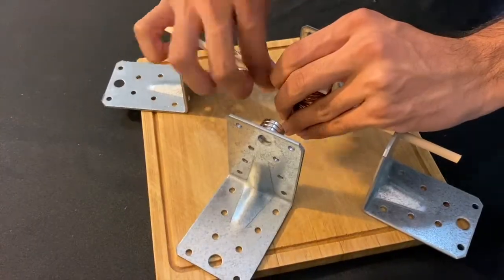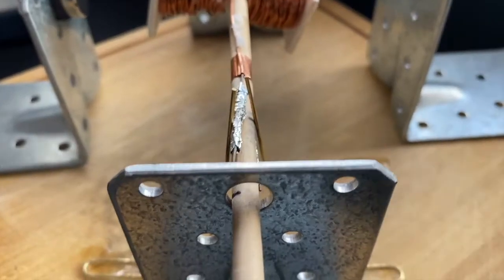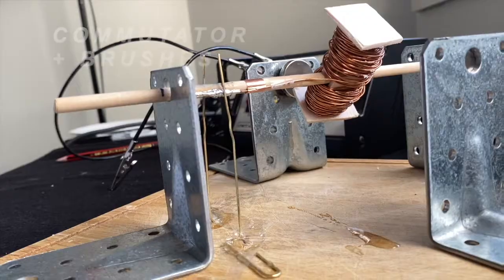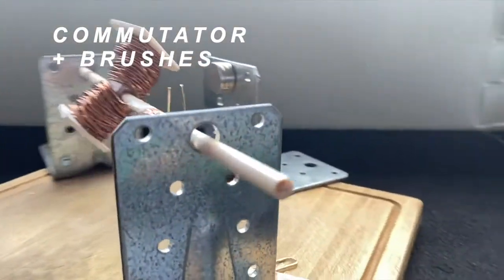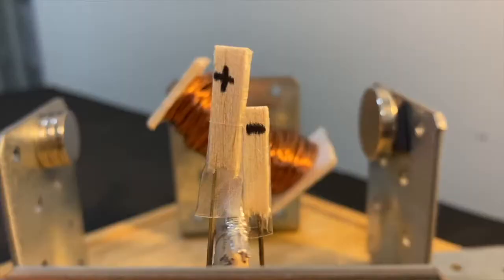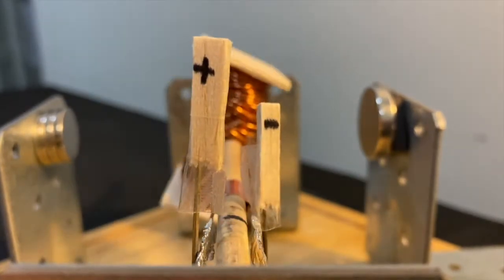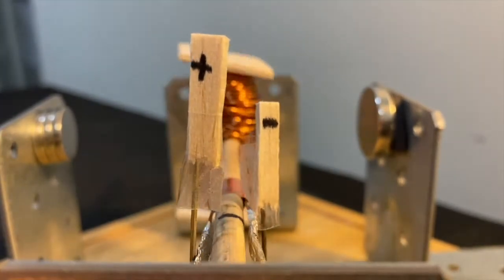To solve this, we tape the coils down, and then use paper clips to station the battery terminals on either side of the axle. This forms our commutator and our brushes, a setup that automatically reverses the direction of the current flowing through the coil each half cycle of rotation, due to contact with alternating paper clips.